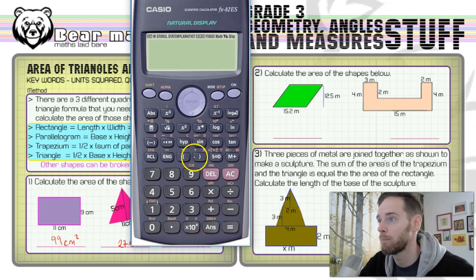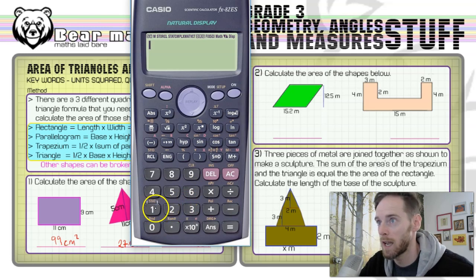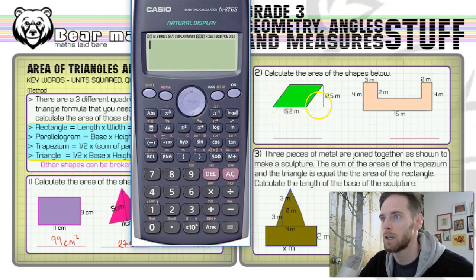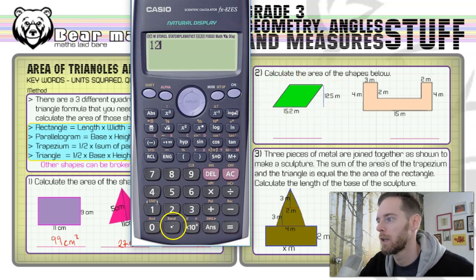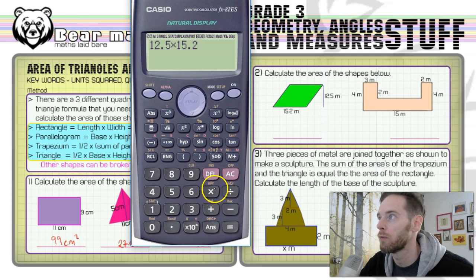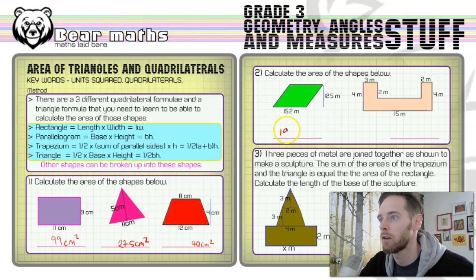Again, for the parallelogram, it's the perpendicular height you use — not the diagonal slant height. Either way around doesn't matter for which number you put first: base times height or height times base. The answer is 190 meters squared, because both measurements were in meters.